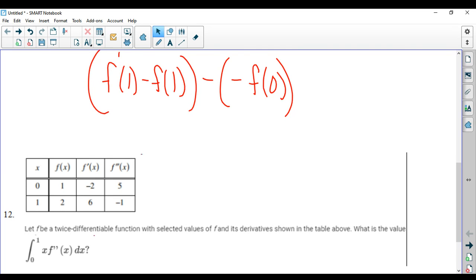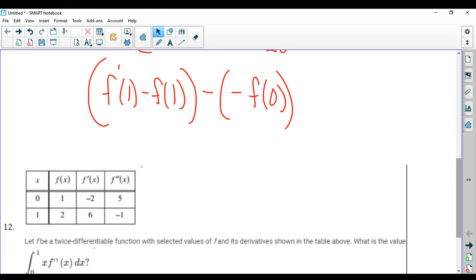So f of 1... f of... is that f prime? f prime of 1 is 6. f of 1, according to the table, is 2. f of 0 is 1.